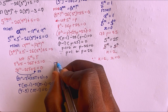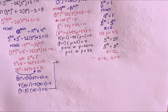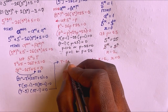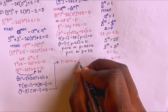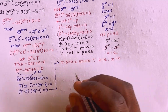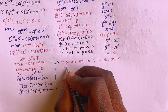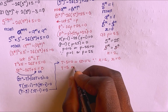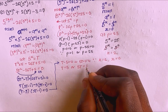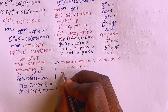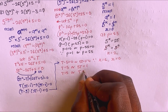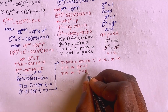From (T minus 5)(5T minus 1) equals 0: T minus 5 equals 0, or 5T minus 1 equals 0. Therefore T equals 5, or T equals 1 over 5.